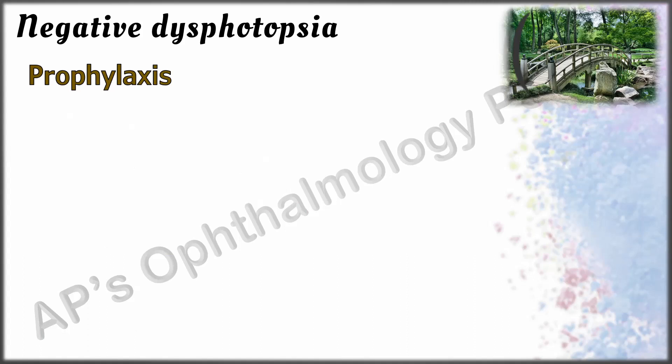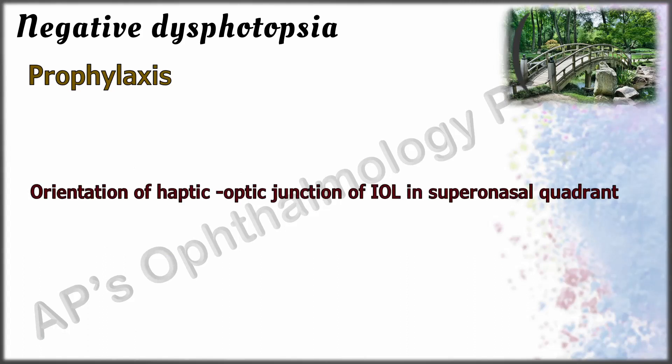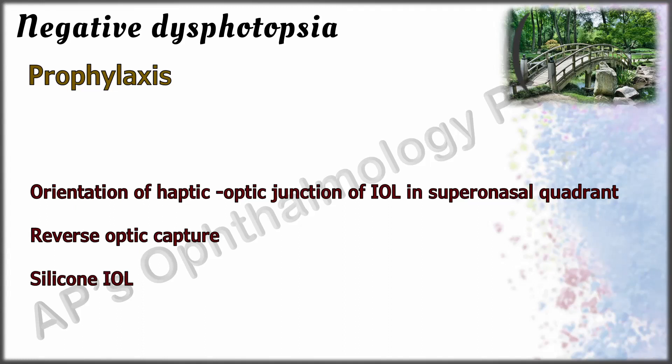Prophylaxis is for the contralateral eye of a patient who had negative dysphotopsia after surgery in the first eye. Options include orientation of the haptic-optic junction of the IOL in the superonasal quadrant, reverse optic capture, or use of a silicone IOL.